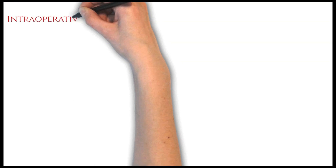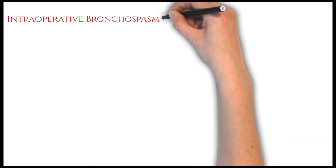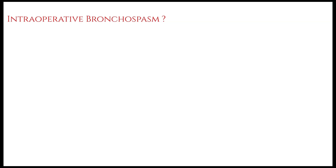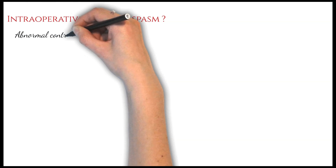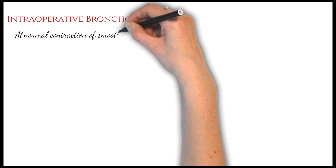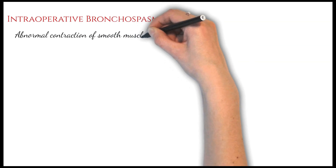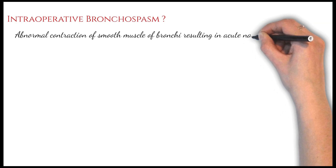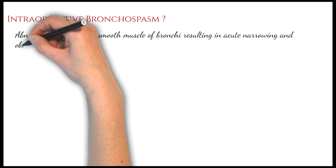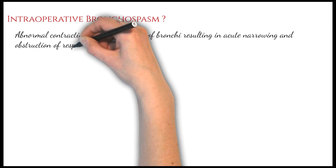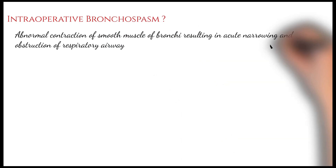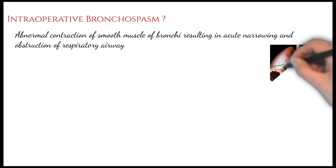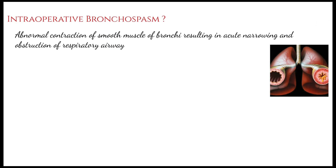So what is intraoperative bronchospasm? As the name suggests, it is an abnormal contraction of the smooth muscles of the bronchi, resulting in acute narrowing and obstruction of the respiratory airway. There is contraction of the smooth muscles of the bronchus, because of which there is obstruction of the respiratory airway.